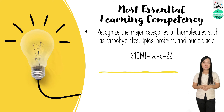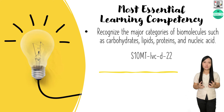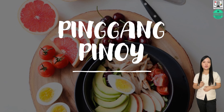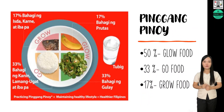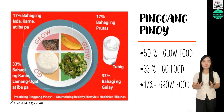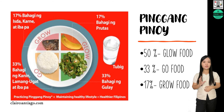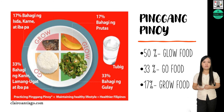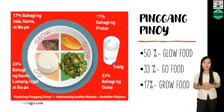Now that you've recognized the major categories of biomolecules — carbohydrates, nucleic acid, lipids, and proteins — you may wonder what proportions of each you should eat. The Pinggang Pinoy will help you analyze the food proportions for healthy living. As shown in the illustration on your screen, 50% of your daily diet must come from glow foods, which include vegetables and fruits. 33% must include go foods — those heavy in carbs such as rice and other root crops. Only 17% should be grow foods, which are rich in proteins such as fish, eggs, and meat. Maintaining proper proportions will help you gain a healthy living and allow your body to function properly.